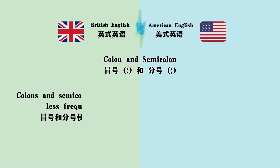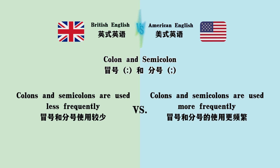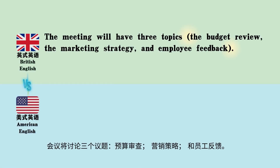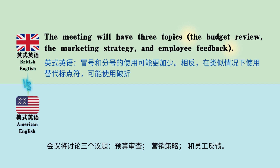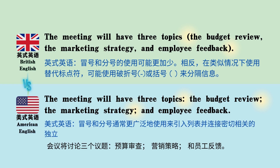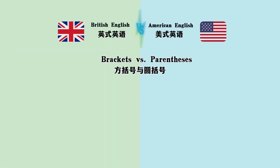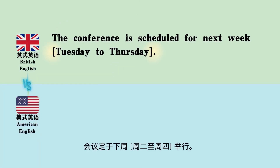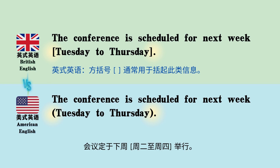Colons and semicolons: used less frequently versus used more frequently. 'The meeting will have three topics: the budget review, the marketing strategy, and employee feedback.' 'The conference is scheduled for next week, Tuesday to Thursday' — shown in both styles.